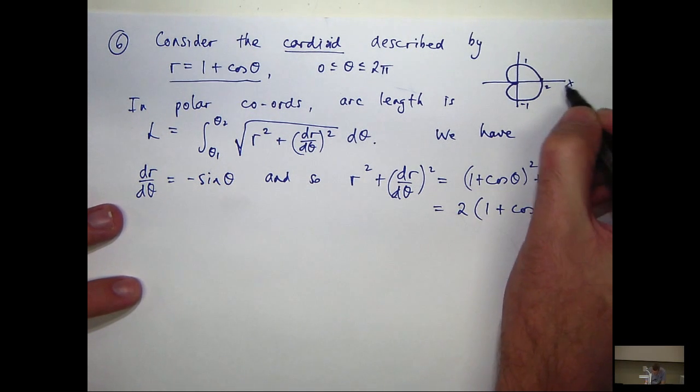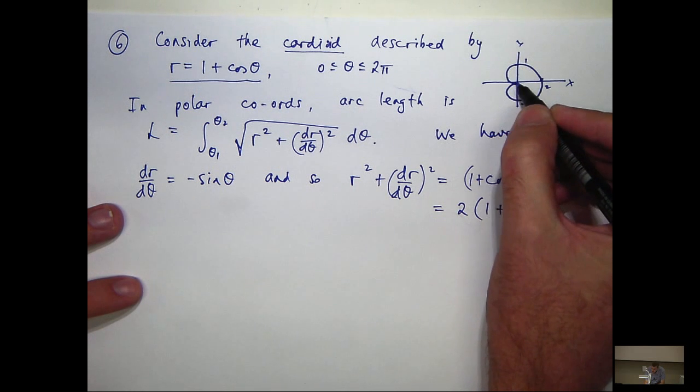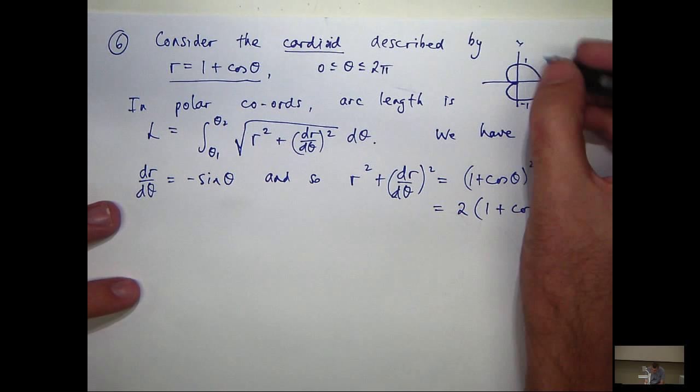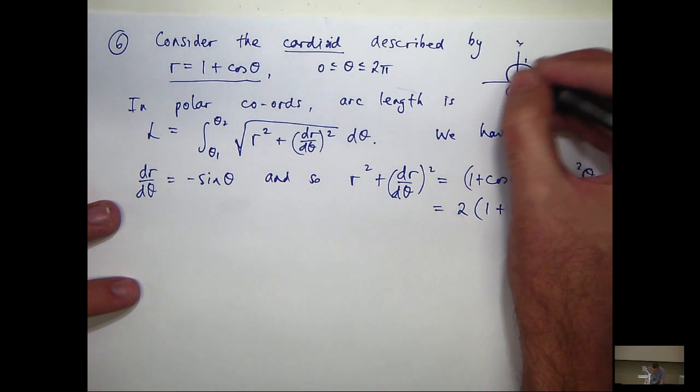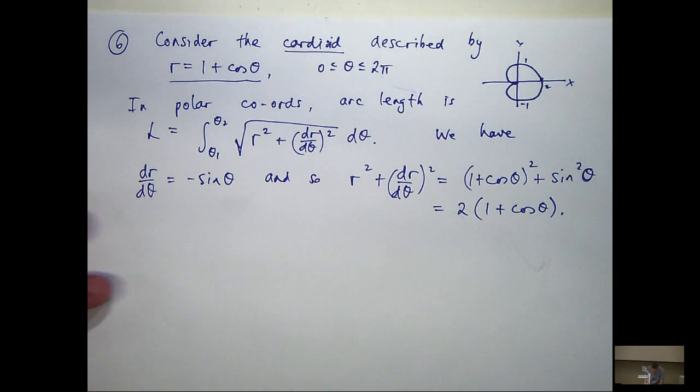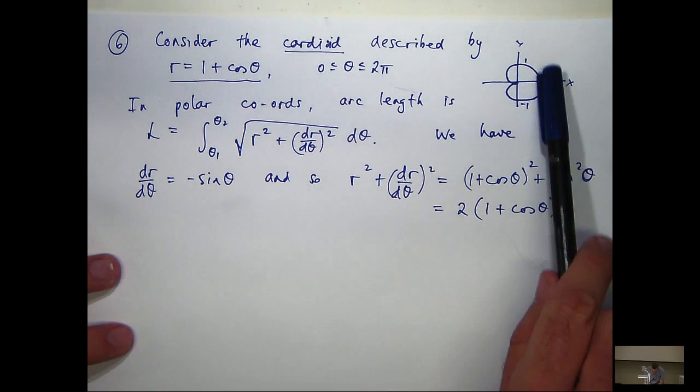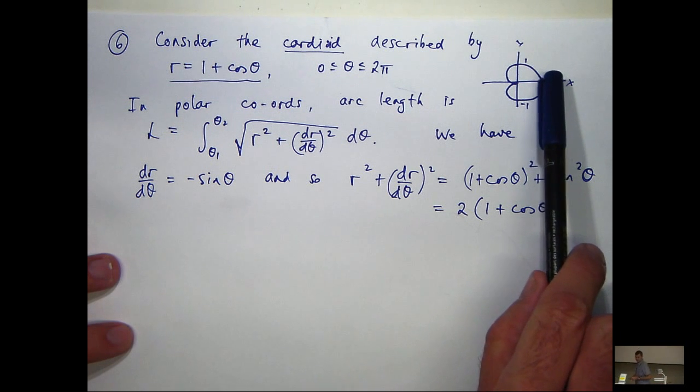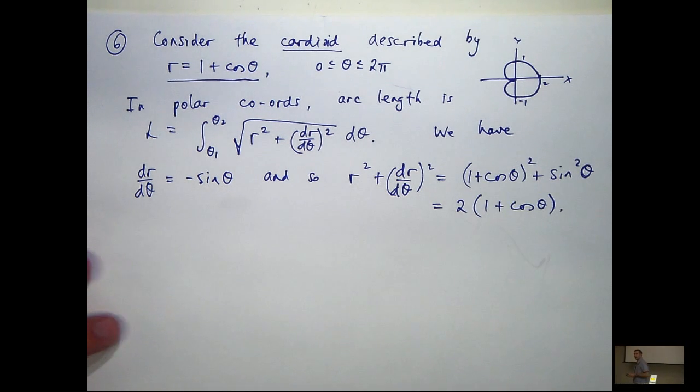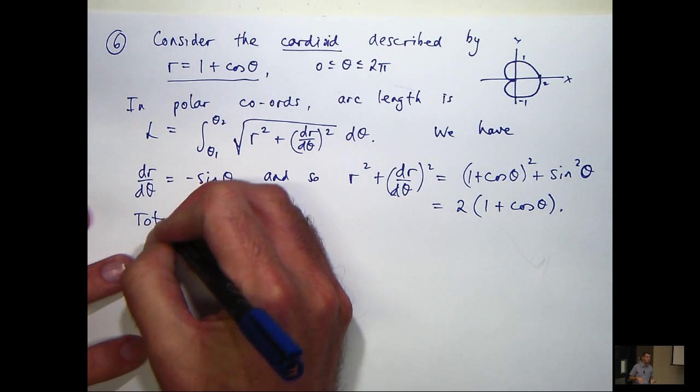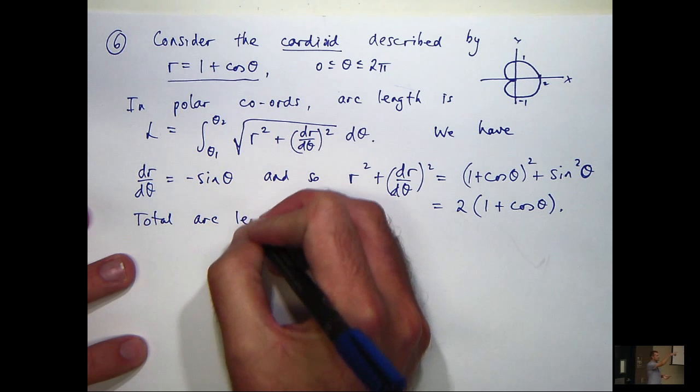Before we get to that though, what I'm going to do - see we've got some symmetry in the x-axis - I'm just going to calculate the length of the top half of the curve and multiply it by two. If you integrated from zero to 2π, if you did try to do one revolution, you're going to run into problems, I think. So here I'm just going to restrict myself to the interval zero to π and then multiply it by two.